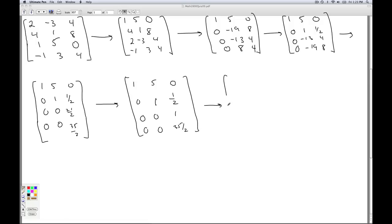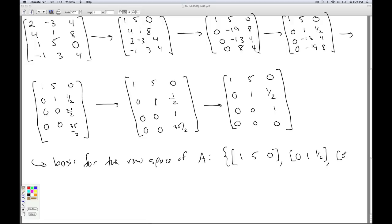And then finally zero out the last row by multiplying by the negative 35 halves. Okay, so we know from class that a basis for the row space of A is the non-zero vectors in the row echelon form. So that's going to be 1, 5, 0, 0, 1, a half, 0, 0, 1.